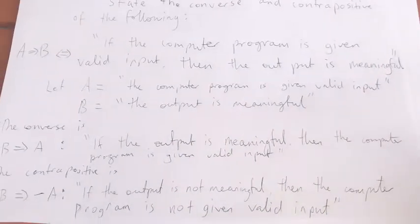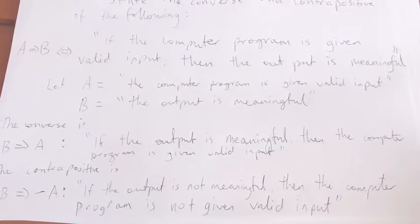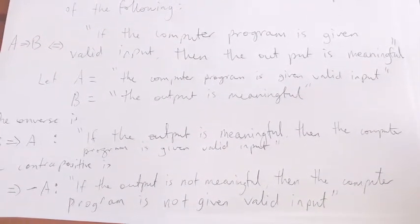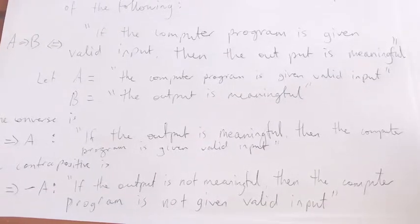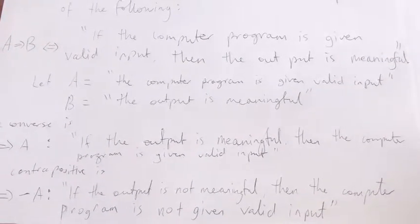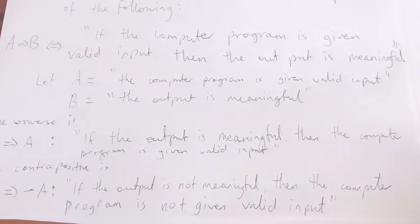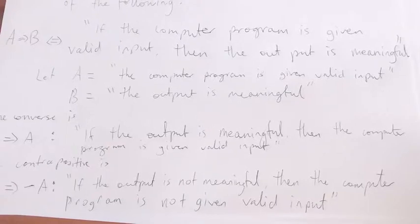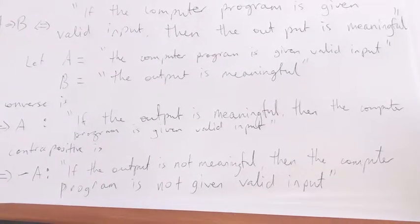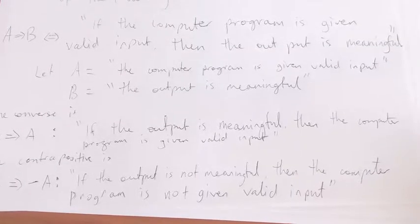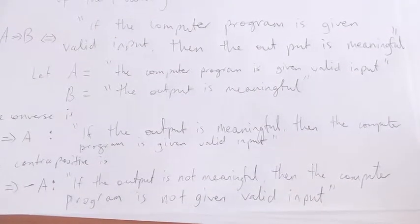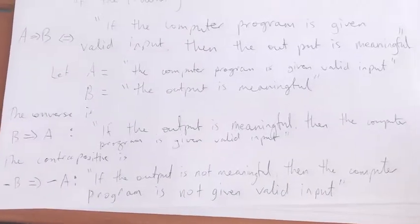It's funny how you interpret these statements, they kind of rely on your understanding of computers a little bit, but the negation of the program being given valid input is that it was not given valid input, which covers all the possibilities of possibly it wasn't even given input, the input that it was given was not valid. It's not necessarily logically true that it was given some input and that input was invalid, nor is it necessarily true that it was even given anything at all. It simply was not given valid input, so that's the contrapositive.